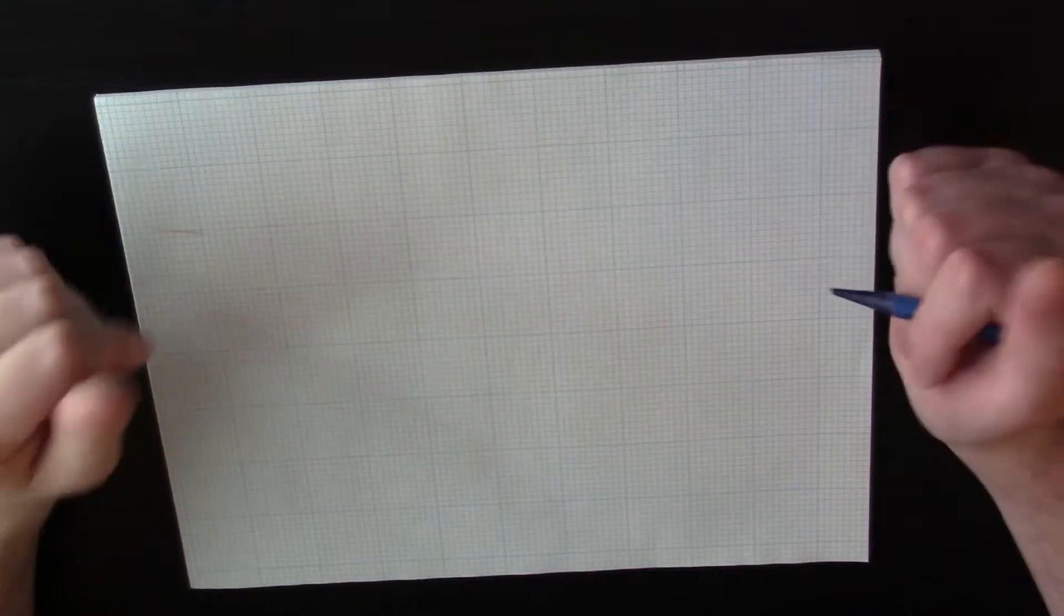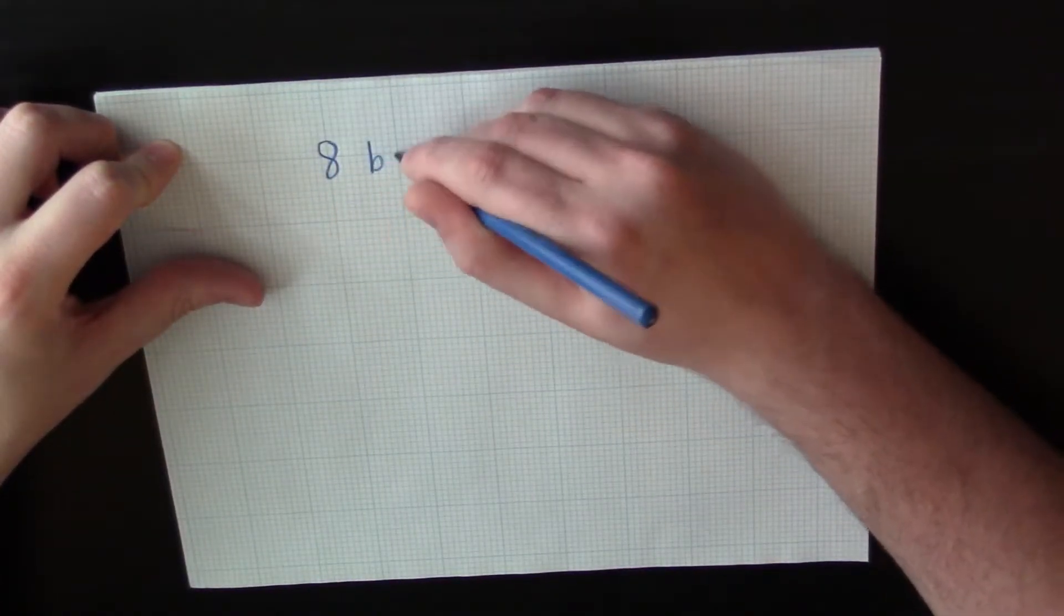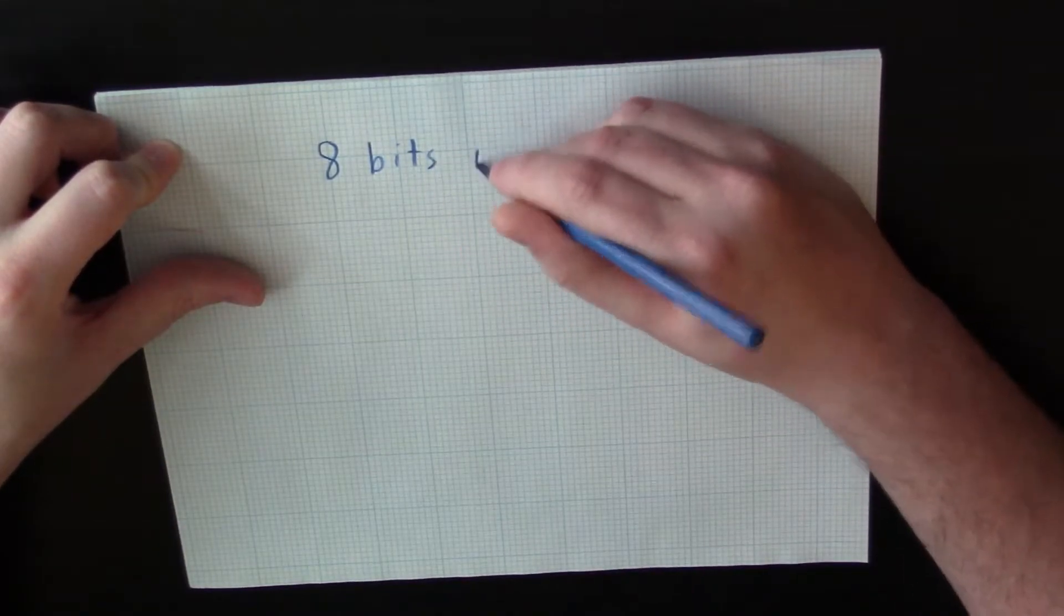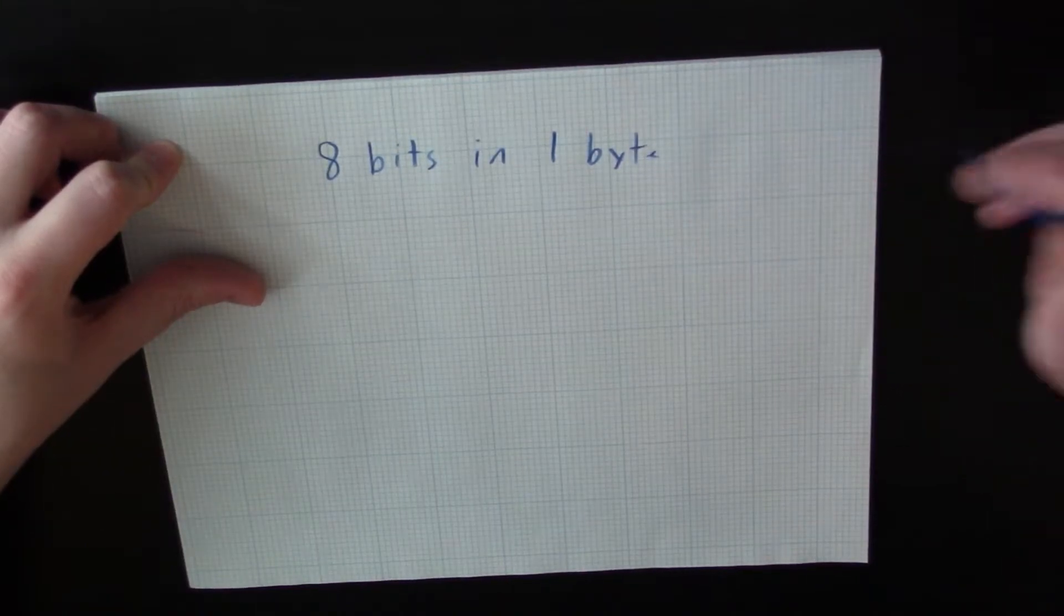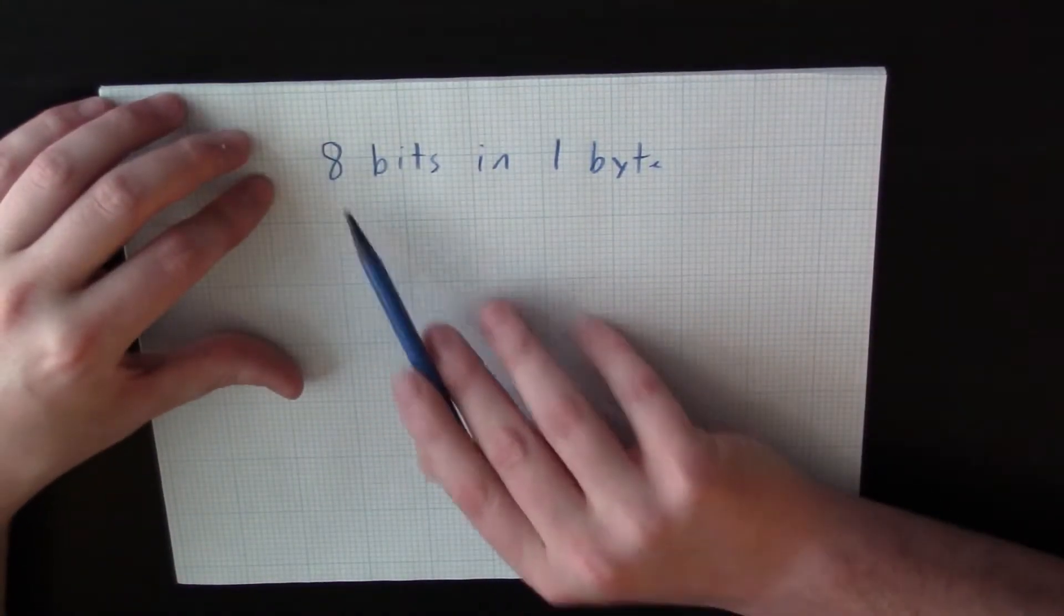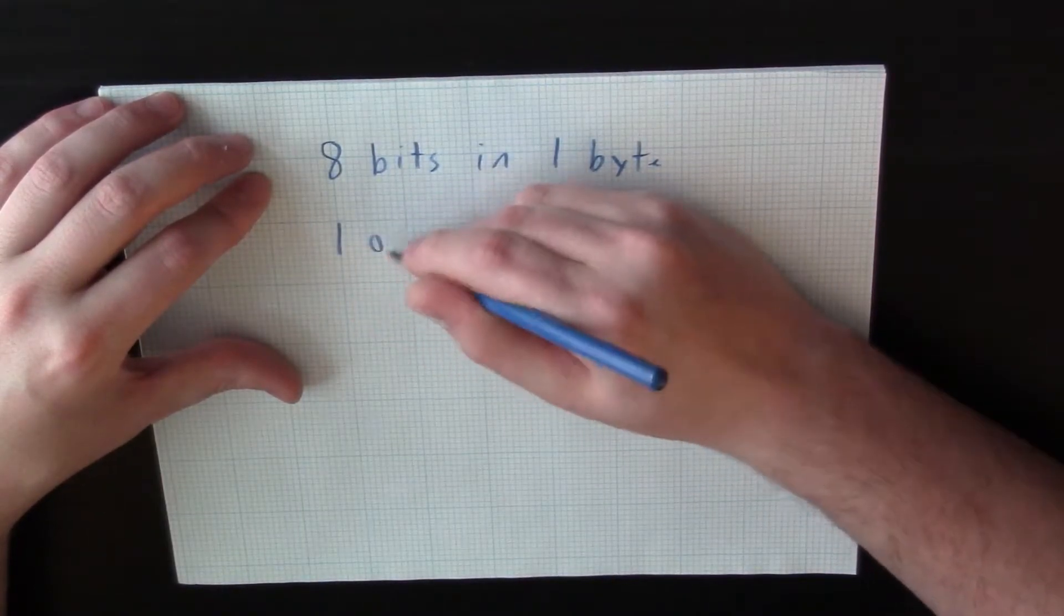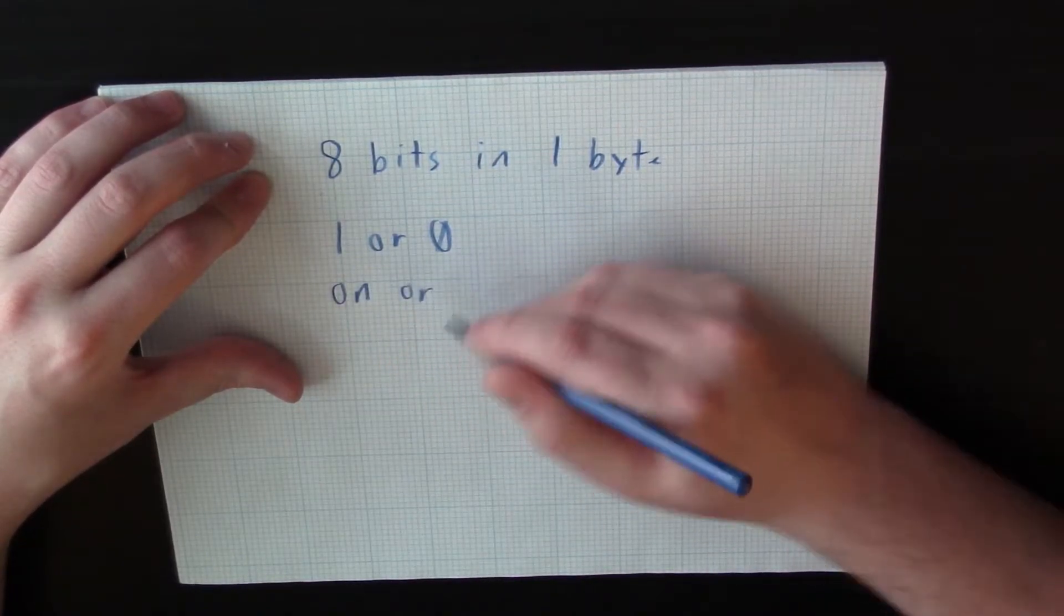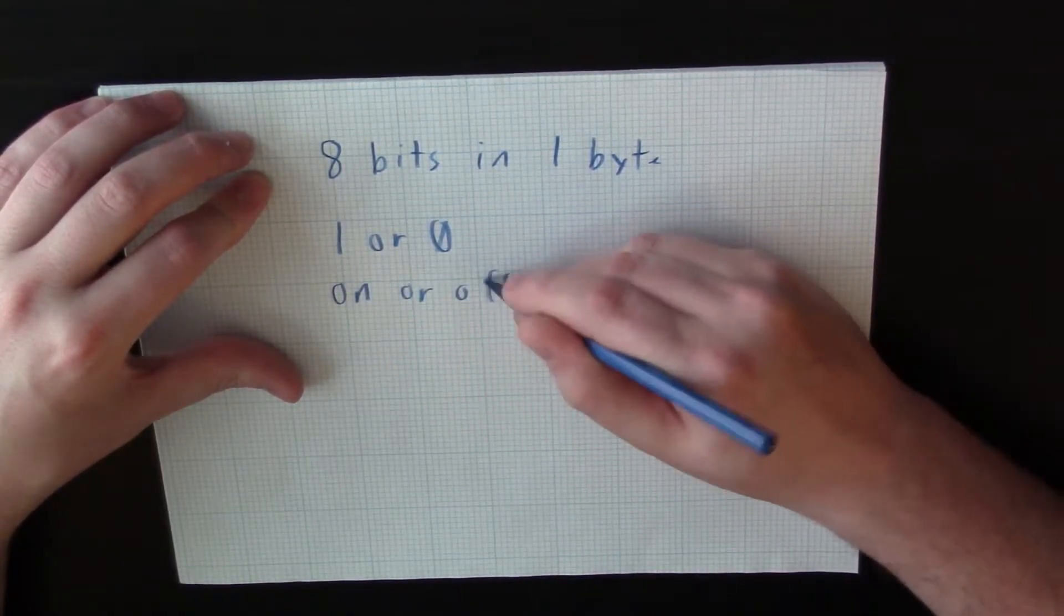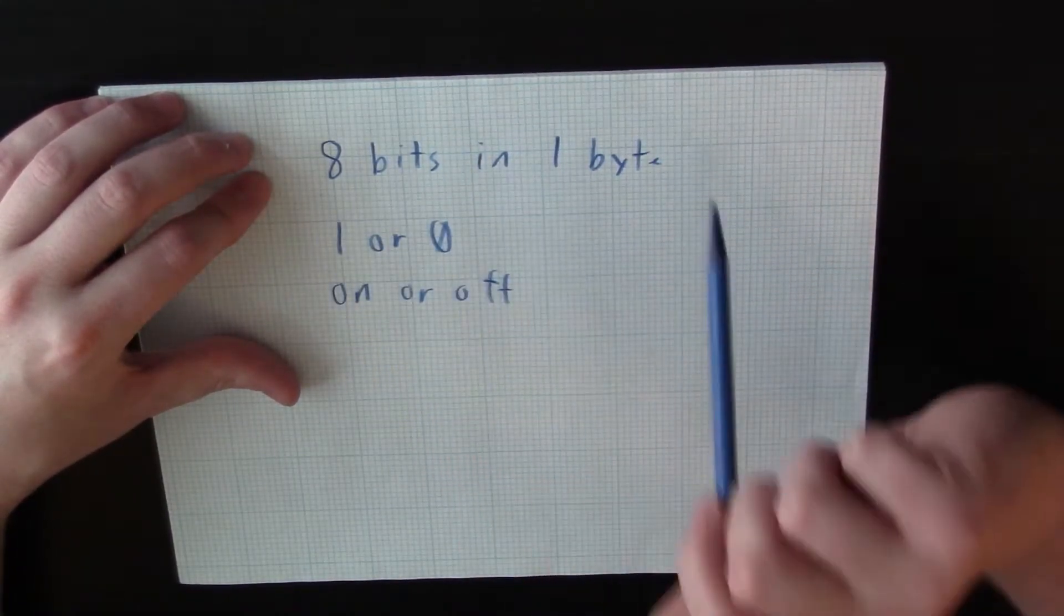Okay, so some stuff that you don't need to know, but it's just good to know. First being there are eight bits in one byte. So what is a bit? Well, a bit is either a one or a zero, an on or off, and this is how binary is represented. So eight of those makes one byte.